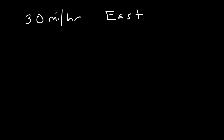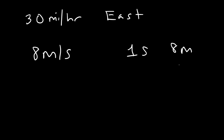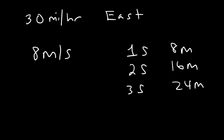In two hours it travels 60 miles; three hours, 90 miles. Speed tells you how fast the distance is changing; velocity tells you how fast the displacement is changing. If an object is moving at 8 meters per second, every second the distance changes by 8 meters — so after one second, 8 meters; two seconds, 16 meters; three seconds, 24 meters.